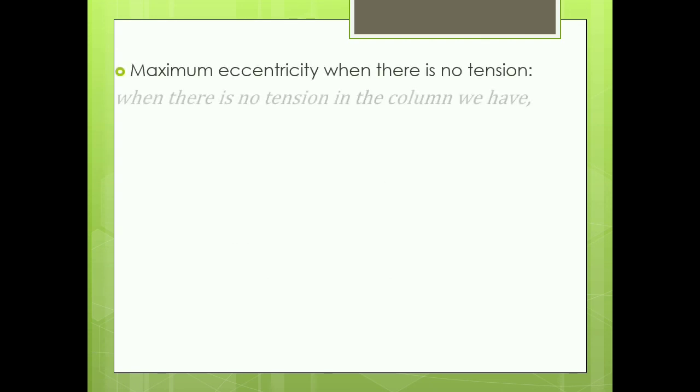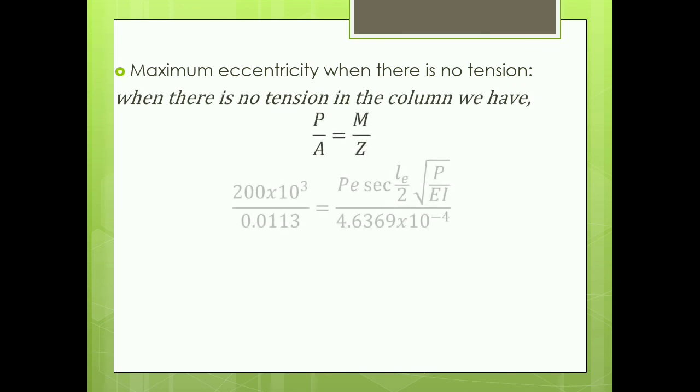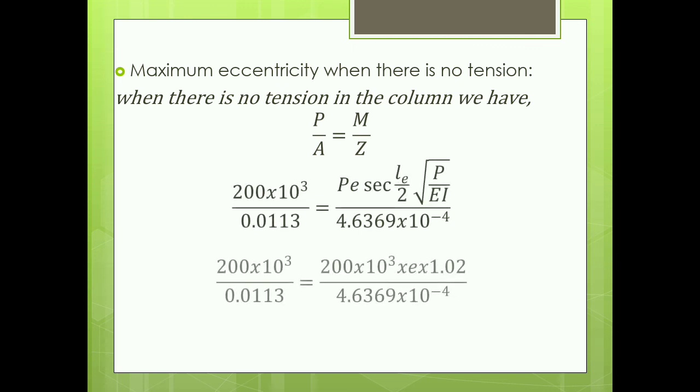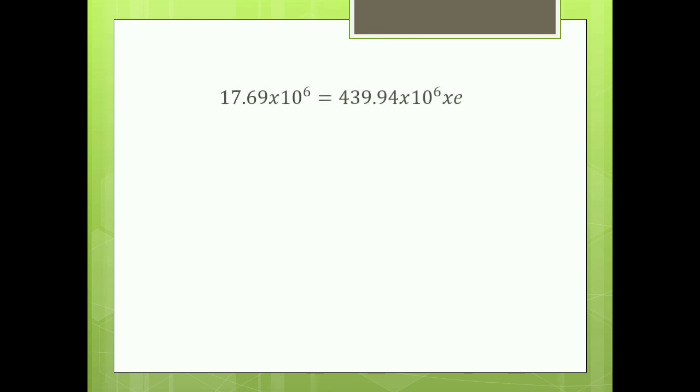Next we are going to find the maximum eccentricity under the condition if there is no tension. Whenever there is no tension in the column, we will simply equate the direct stress and the bending stress. Finally, upon simplification, we have to apply the load at 40.2 mm to have a column with no tension.